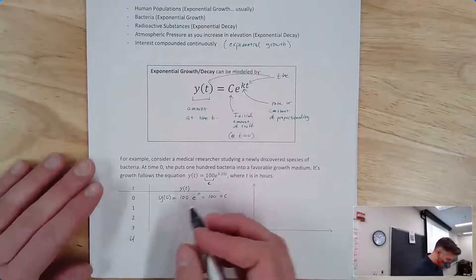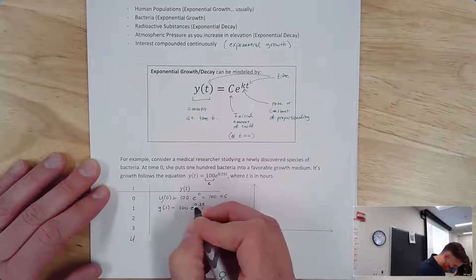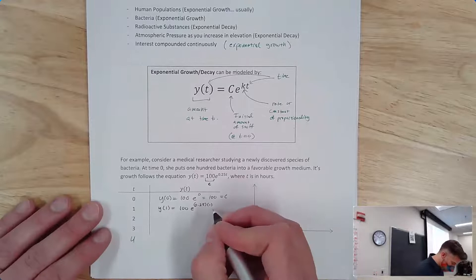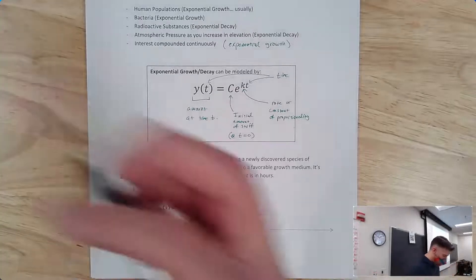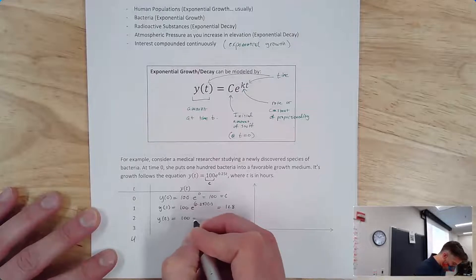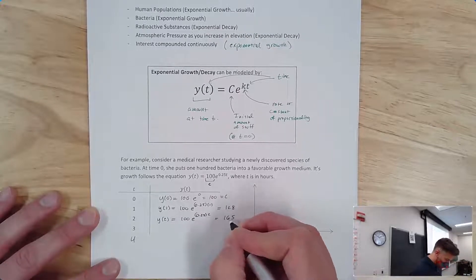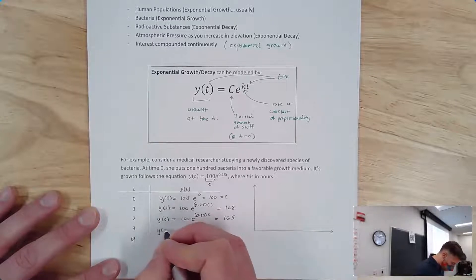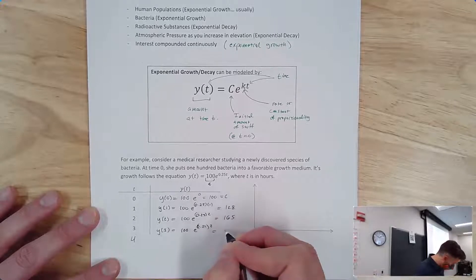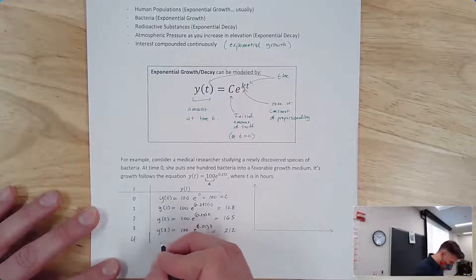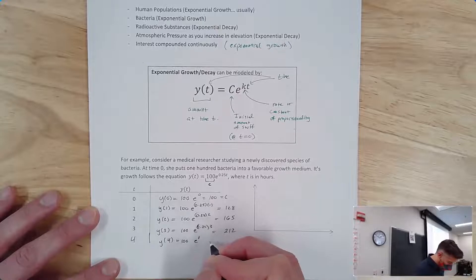Plugging in values: y(1) = 100·e^(0.25) ≈ 128; y(2) = 100·e^(0.5) ≈ 165; y(3) = 100·e^(0.75) ≈ 212; y(4) = 100·e^(1) ≈ 271. The C constant is always the initial value — that's exactly why we highlight it.